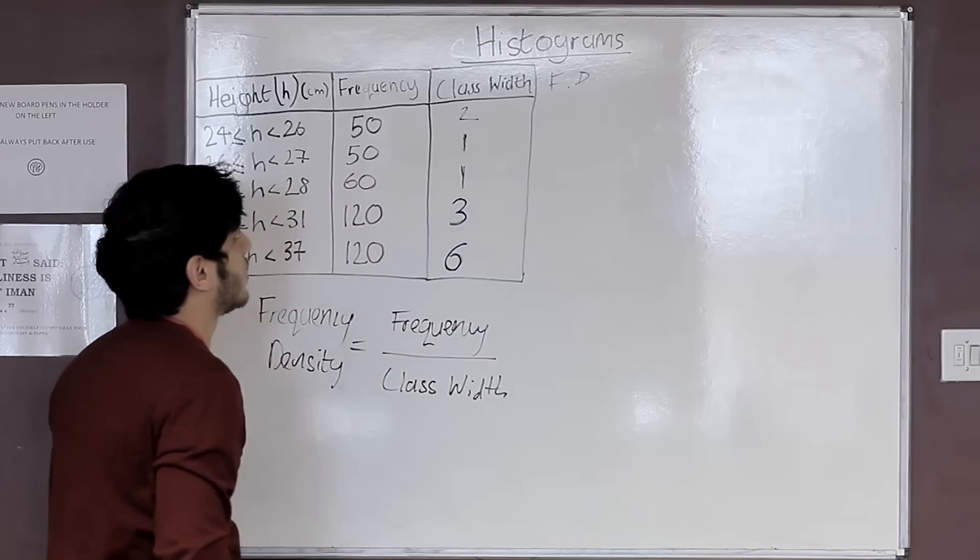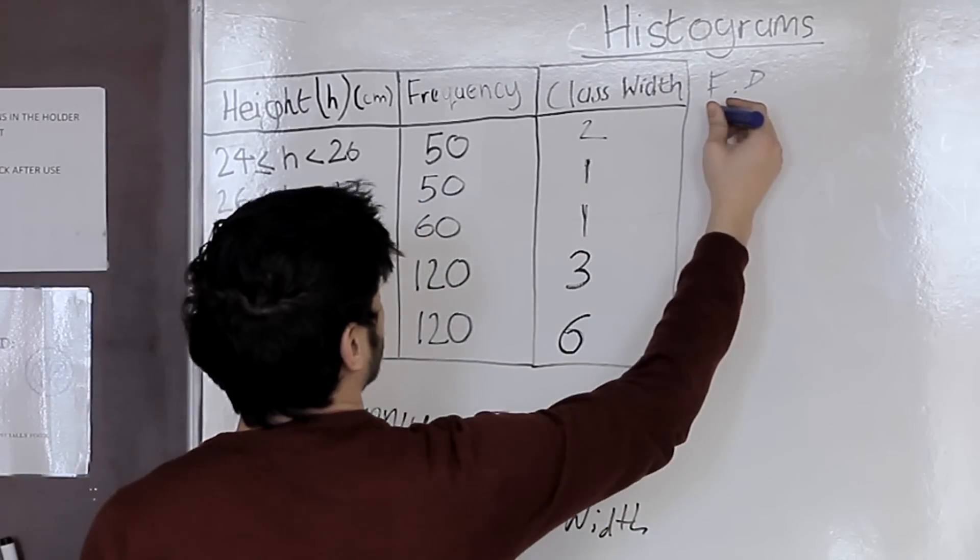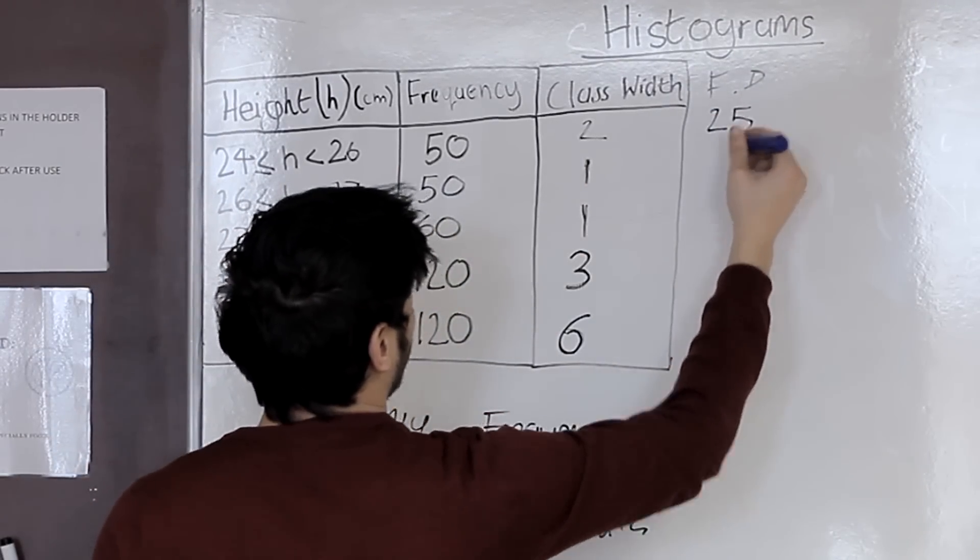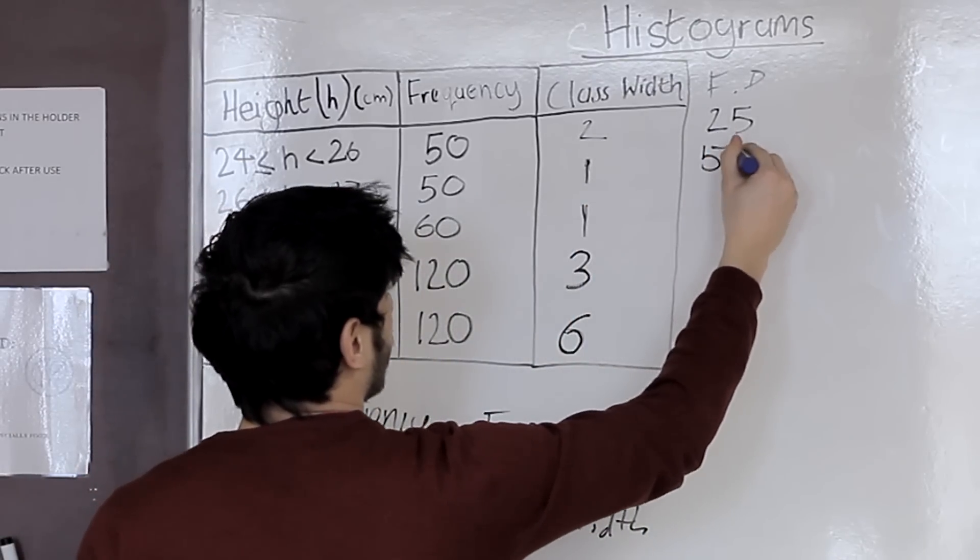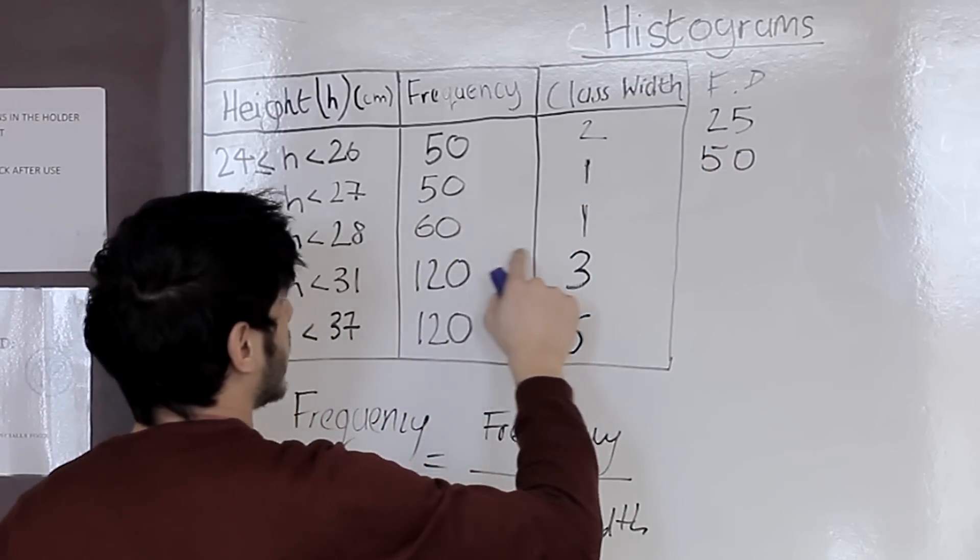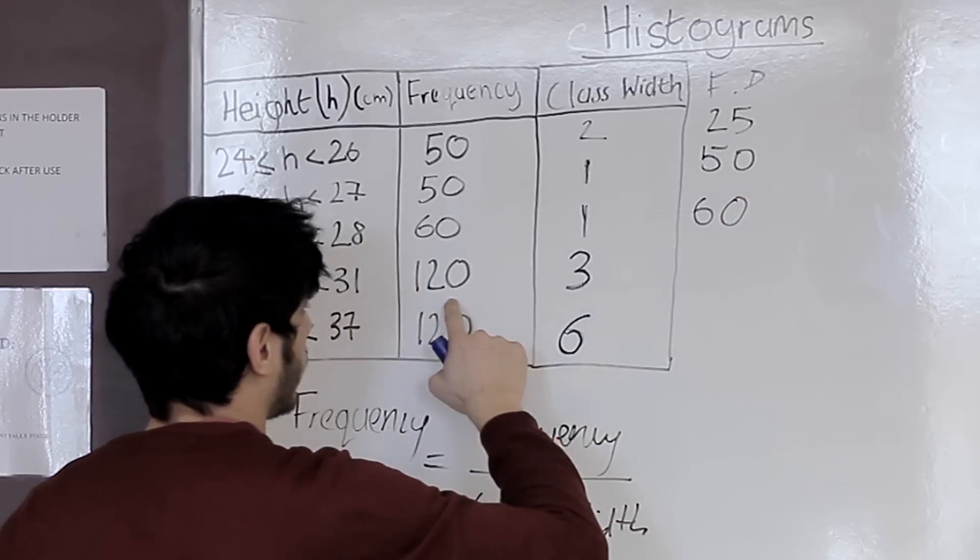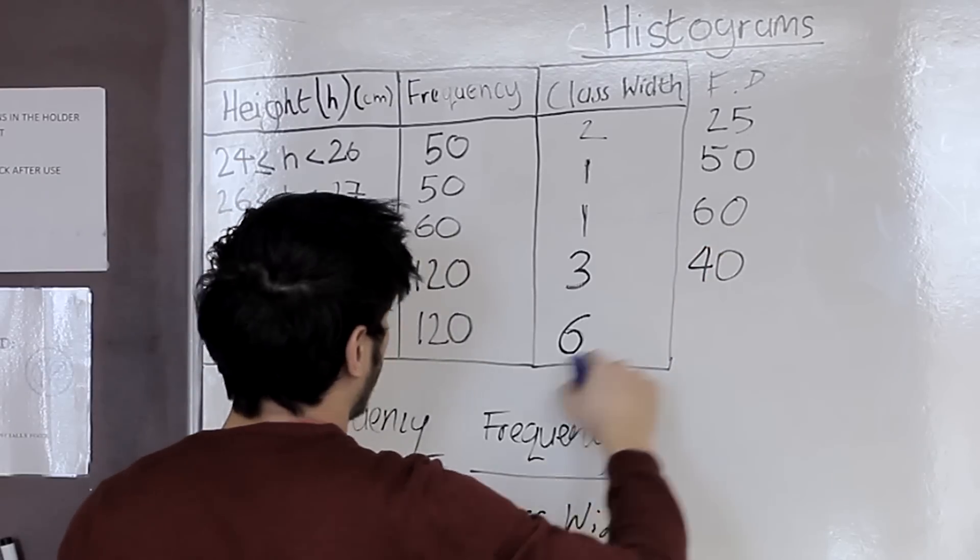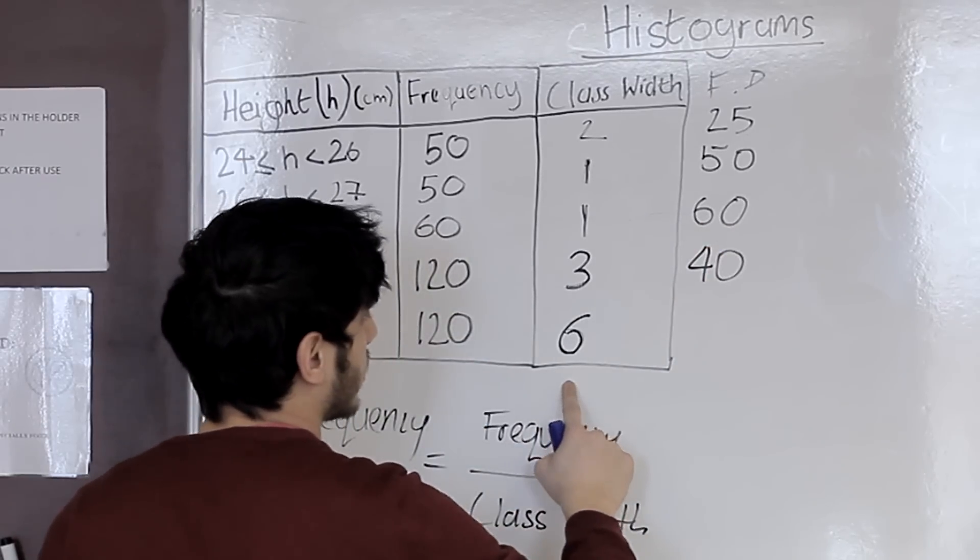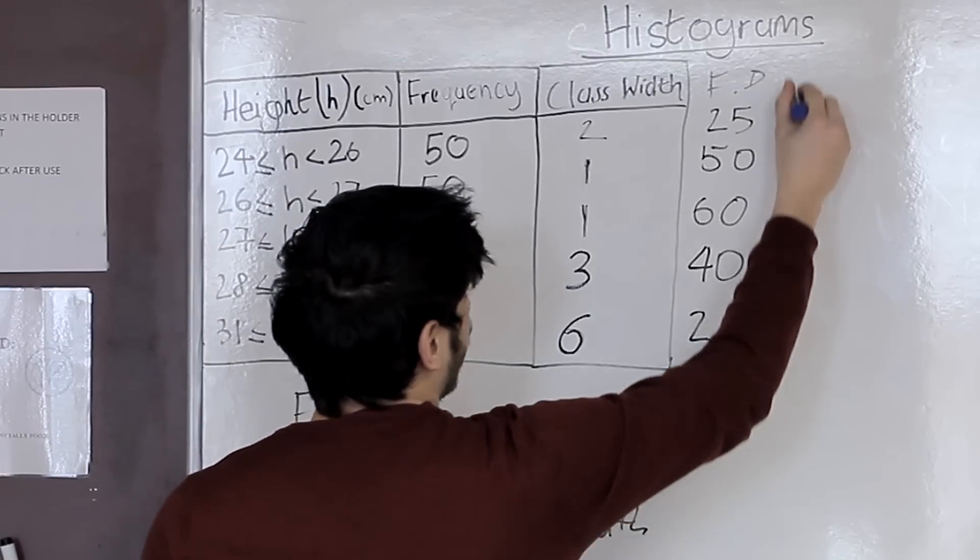So frequency density will be 50 divided by 2 which is 25, 50 divided by 1, 50, 60 divided by 1 which is 60, 120 divided by 3 which is 40 and 120 divided by 6 which is 20. That is our frequency density.